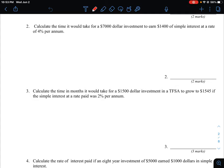Okay, so let's take a look at some of these financial literacy questions here. Start with question number two. It says to calculate the time it would take for a $7000 investment to earn $1400 of simple interest at a rate of 4% per annum.